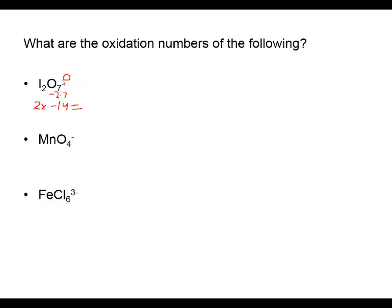Two x minus fourteen adds up to zero since there's no charge shown. Adding fourteen to both sides, two x equals positive fourteen. Dividing both sides by two, x equals positive seven. So my iodine has an oxidation number of plus seven in diiodine heptoxide.